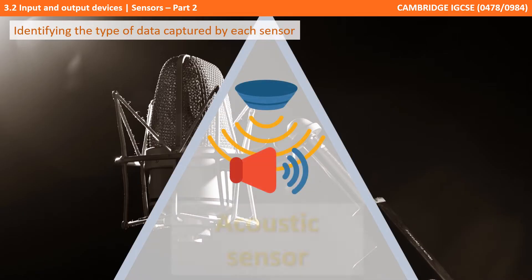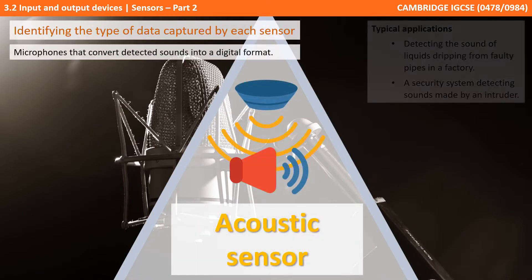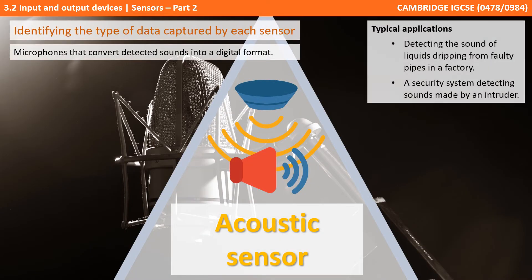We'll start with the acoustic sensor. These are essentially microphones and they convert detected sound into a digital format. Typical examples of where these sensors might be used are detecting dripping liquids from faulty factory pipes and detecting noise made by an intruder on a security system.